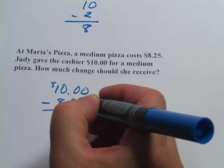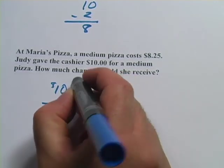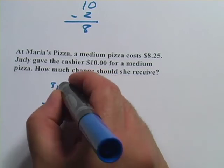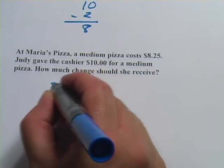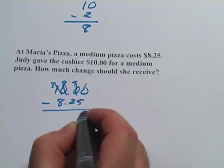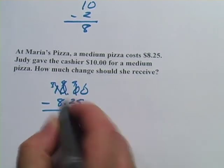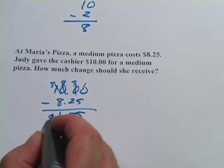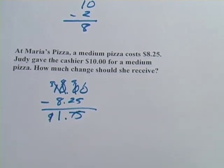Let's see, zero, take away five. I'm going to have to borrow. That becomes a nine if I borrow from here. And I get 10 minus 5 is 5, 9 minus 2 is 7, and 9 minus 8 is 1. I get $1.75 in change back.